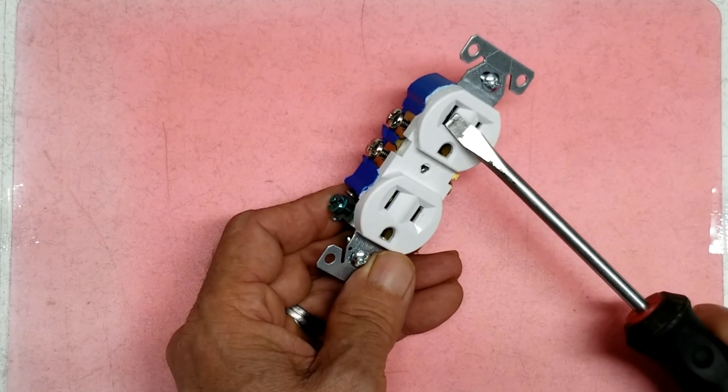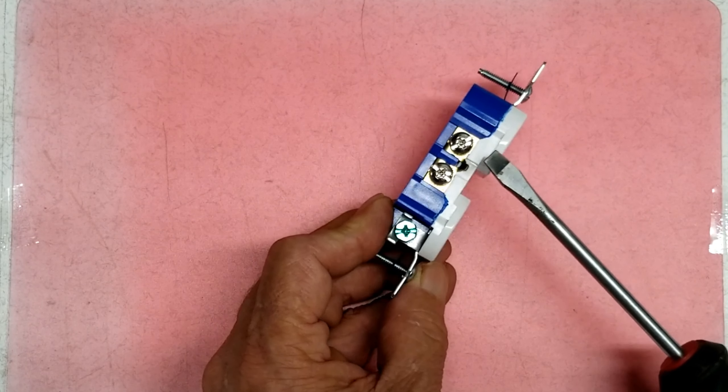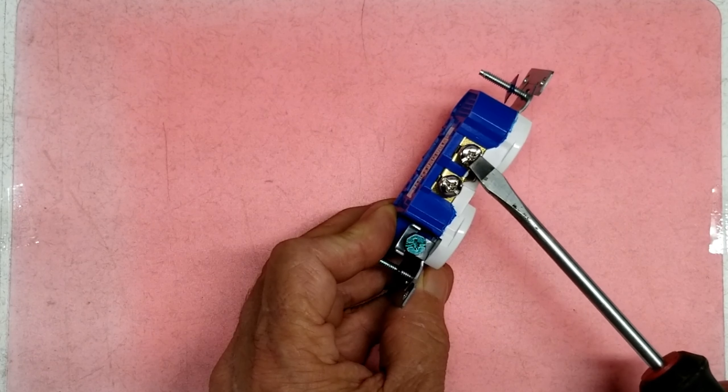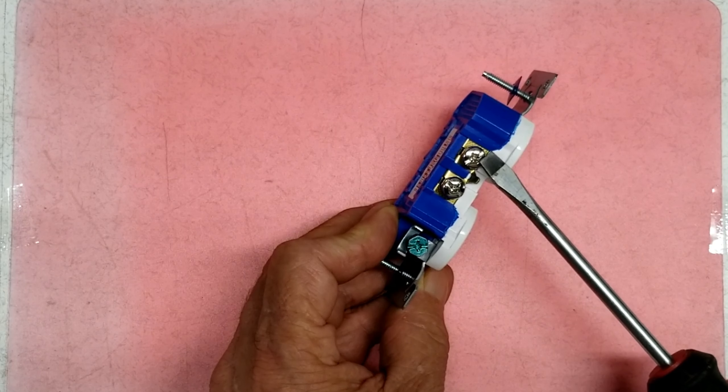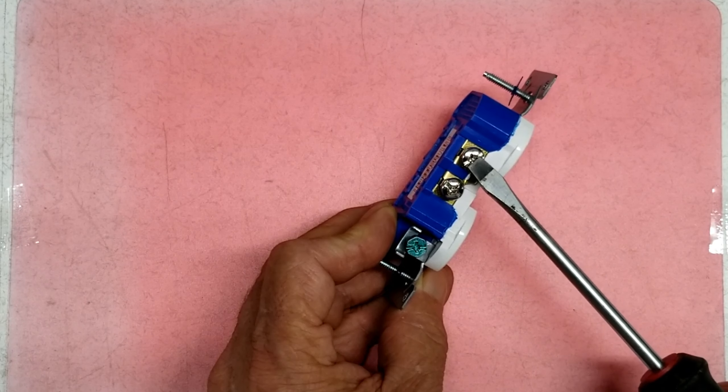And on the big slot, which is the neutral, it always corresponds with the silver, the brighter color. That's your return or your neutral back to your box.